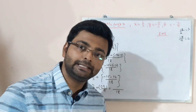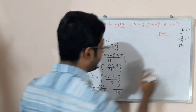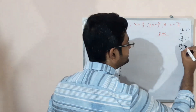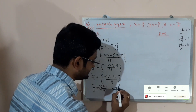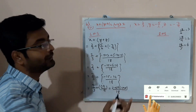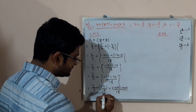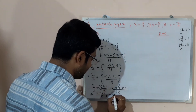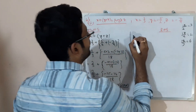Now 2 by 3 plus (minus 29 by 18). LCM of 3 and 18 is 18. Divide 18 by 3 to get 6, so multiply numerator by 6: 2 times 6. Plus bracket minus 29 times 1, because 18 divided by 18 is 1. That gives 12 minus 29 by 18, which equals minus 17 by 18.